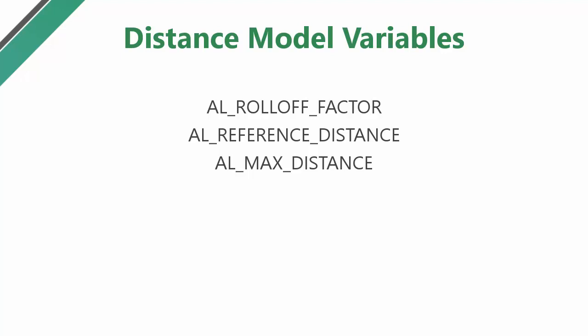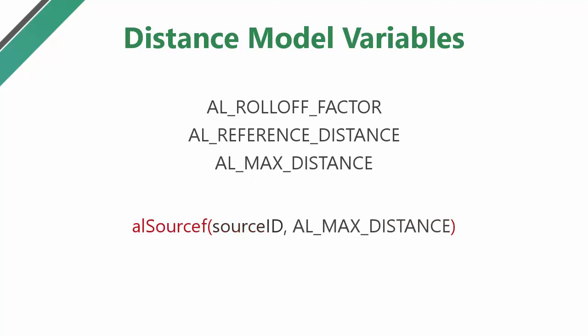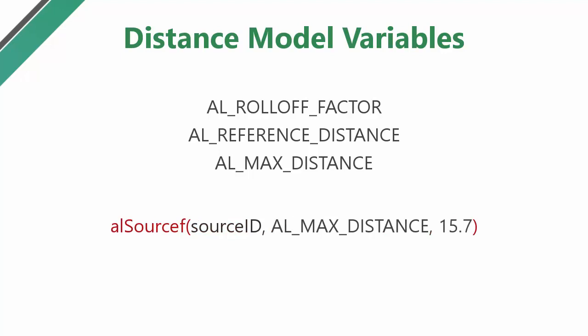Each source can use different variables for the distance attenuation model. Therefore these variables are properties of the source, and so can be set in the usual way by calling al-source-f, putting in the source ID, choosing which variable you want to set, and then putting in the value of that variable.